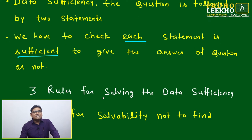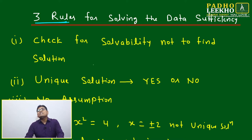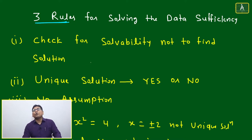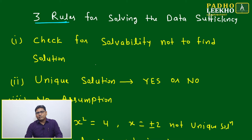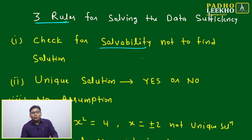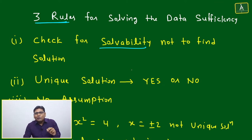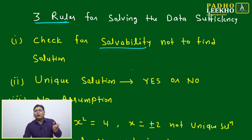To solve data sufficiency, three rules we have to always take care of. Always be careful about these three rules, because if you are not aware of them you will always make mistakes. The first rule, which we have already discussed: check the solvability, not to find the solution. It is not required to find the solution — only check whether it is solvable or not.